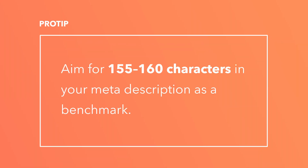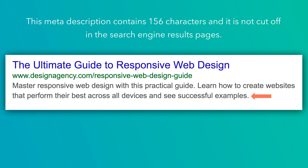Next, aim for 155 to 160 characters in your description. The number of characters that make up your meta description is important. But when actually displaying this meta description, Google doesn't measure by characters — it measures by pixels. Your meta description will be cut off if it becomes too long. That's why you should aim for 155 to 160 characters as a good benchmark. This meta description contains 156 characters and it is not cut off in the search engine results pages.